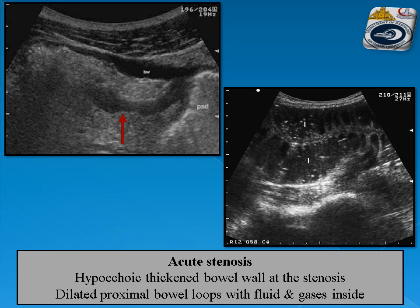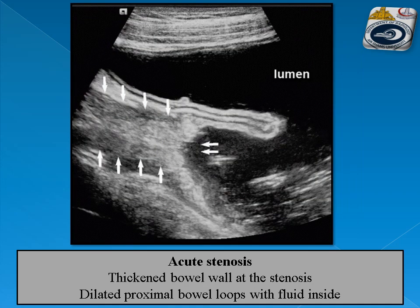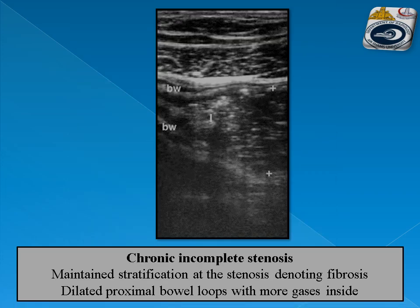In chronic incomplete stenosis, the amount of air within the proximal loop prevails and peristalsis is usually weak. Loss of stratification at the level of the stricture suggests its inflammatory nature with lower degree of fibrosis; however, presence of stratification suggests a higher degree of fibrosis. In this example of chronic stenosis, the structured bowel segment maintains its stratification with air predominating in the proximally dilated bowel loops, indicating higher fibrosis and chronic incomplete stenosis.